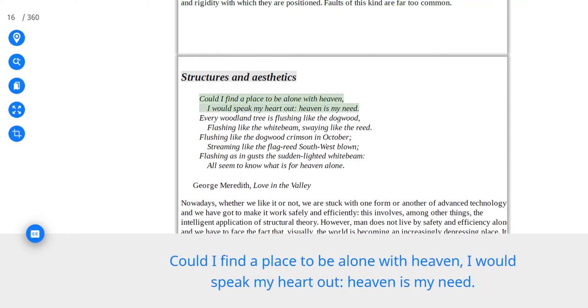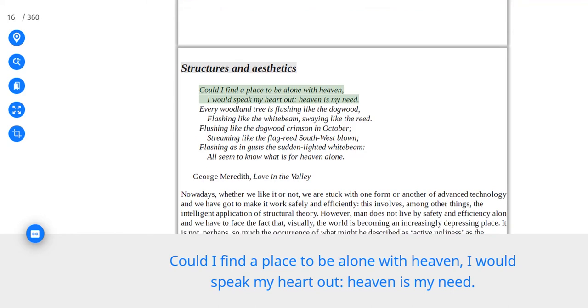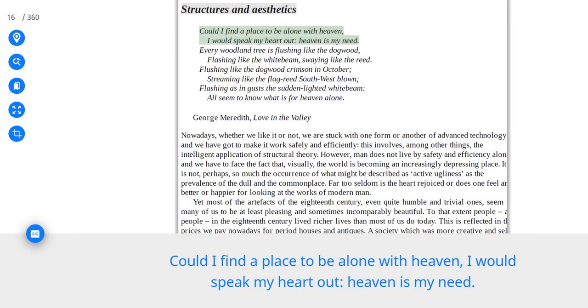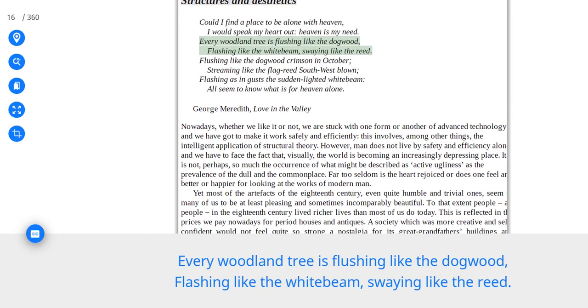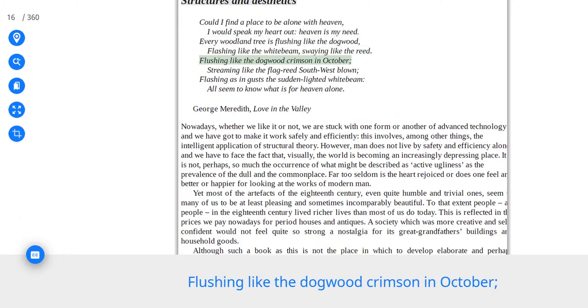Could I find a place to be alone with heaven, I would speak my heart out, heaven is my need. Every woodland tree is flushing like the dogwood, flashing like the white beam, swaying like the reed. Flushing like the dogwood crimson in October. Streaming like the flag reed southwest blown. Flashing as in gusts the sudden lighted white beam. All seem to know what is for heaven alone. George Meredith, Love in the Valley.